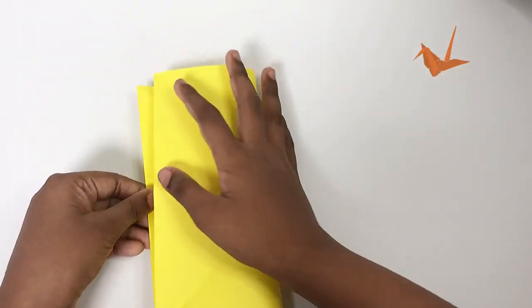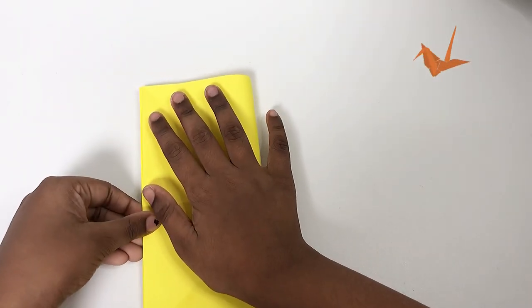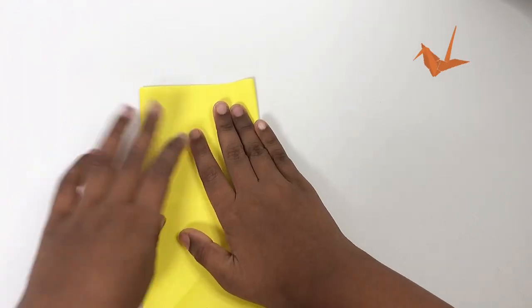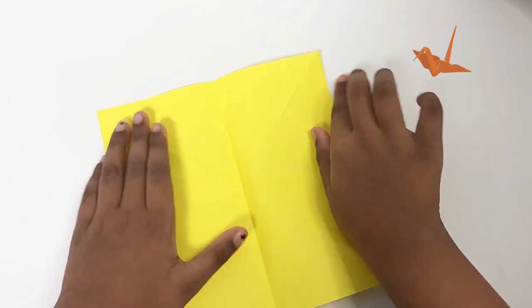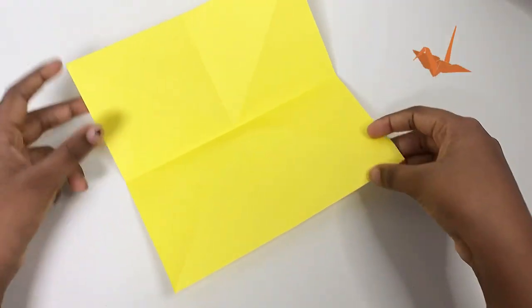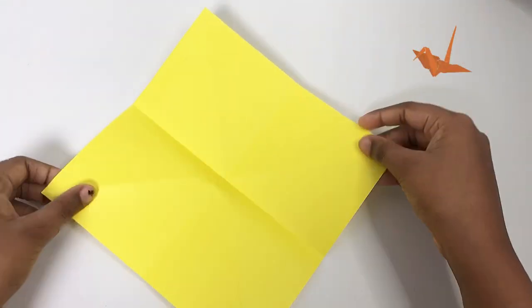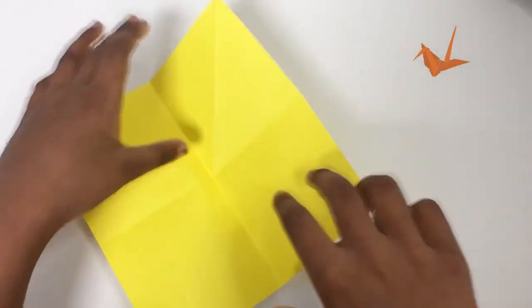Now, unfold it and do it the other way. Now, you can see that these corners and these corners are lifting up. Right?